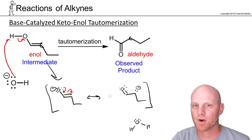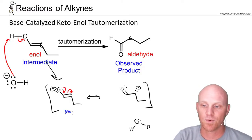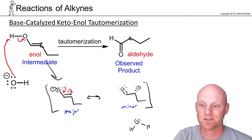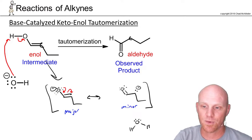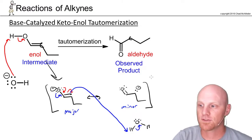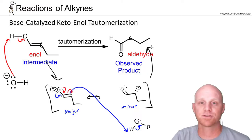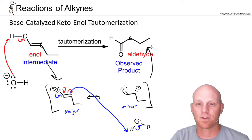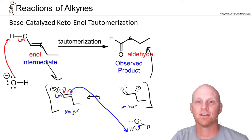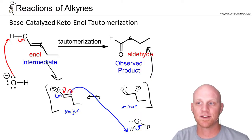We technically should run this off of the major resonance contributor, which is the one where the negative is on the oxygen, not on the carbon. So if we do that, we dump those electrons down and have this come and grab an H. H can only have one bond, so the old one has to break. And that takes us to our aldehyde as the product. Again, just two steps — under basic conditions we deprotonate first and then protonate second, exactly backwards of what we saw with acid-catalyzed keto-enol tautomerization.